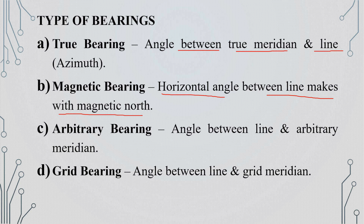Arbitrary bearing is the angle between a line and an arbitrary meridian. A line makes a low angle with the arbitrary meridian and it is called arbitrary bearing. Next is grid bearing — it is the angle between a line and the grid meridian.